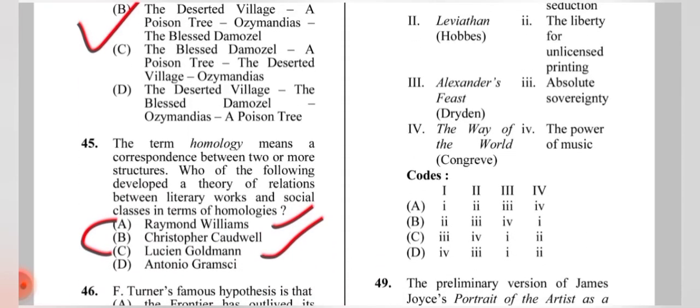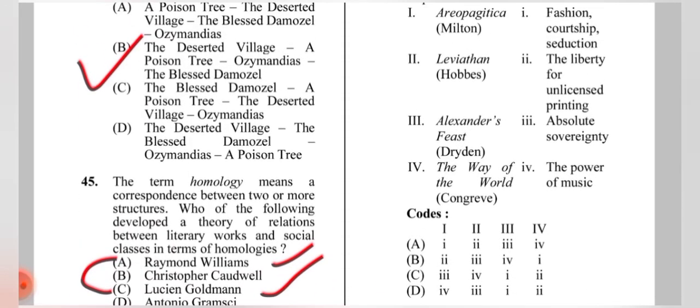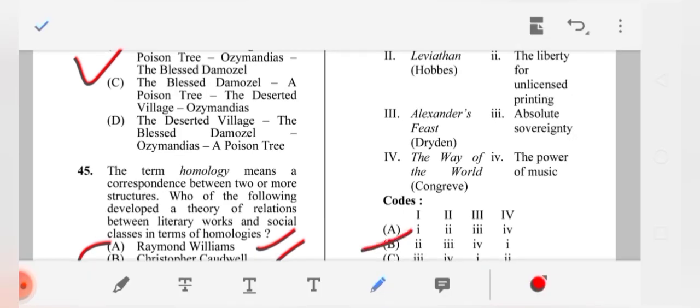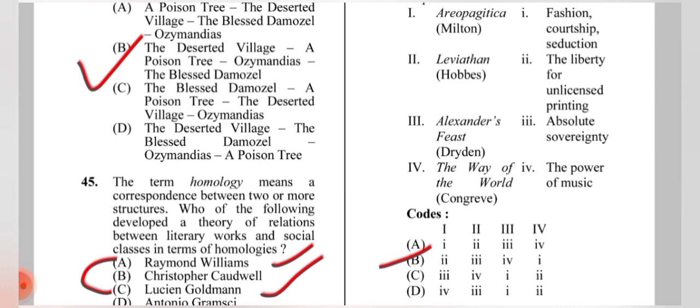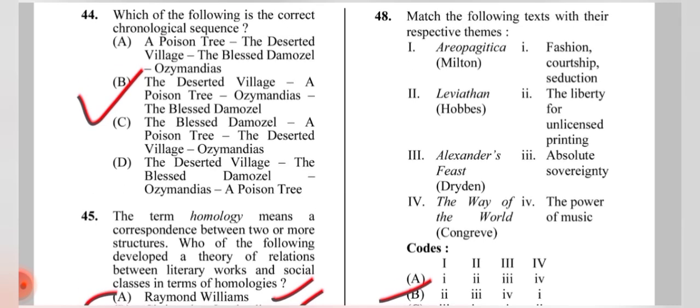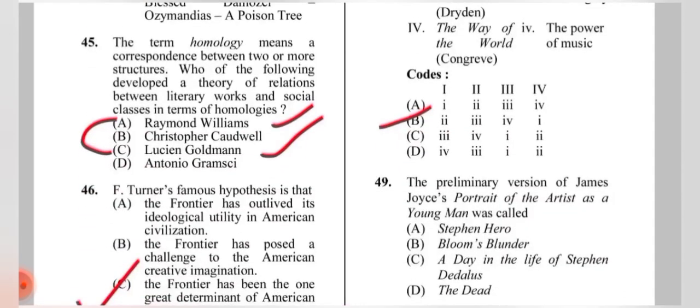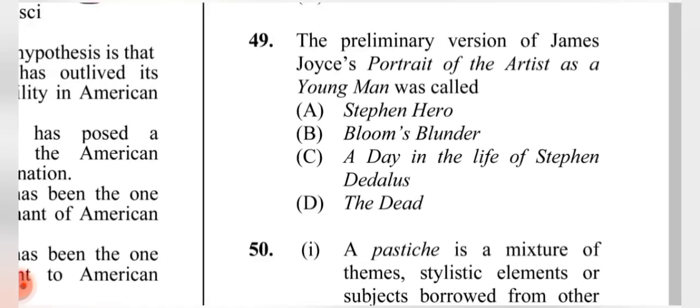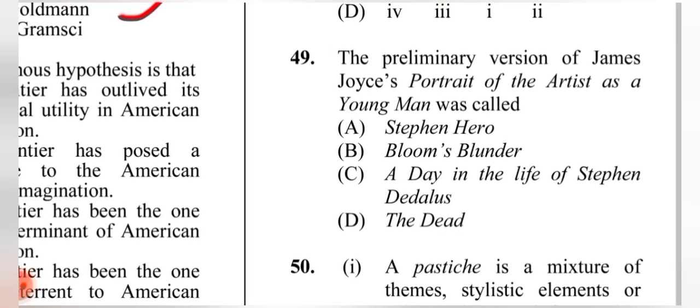Question 48: Match texts with their respective themes. The correct answer is (B): 'Areopagitica' — liberty of unlicensed printing; Hobbes' 'Leviathan' — absolute sovereignty; Dryden's 'Alexander's Feast' — the power of music; Congreve's 'The Way of the World' — fashion, courtship, seduction.